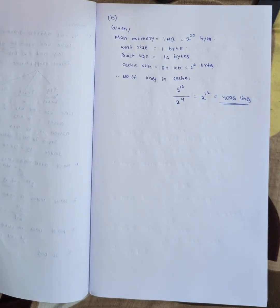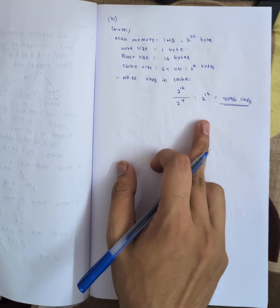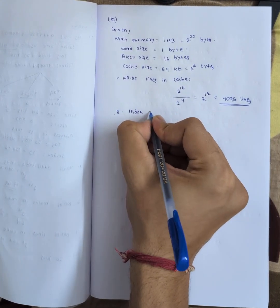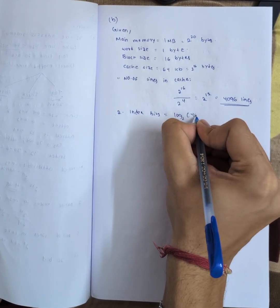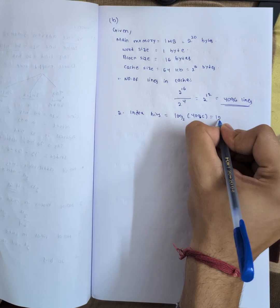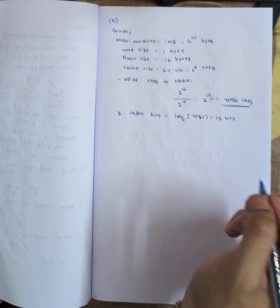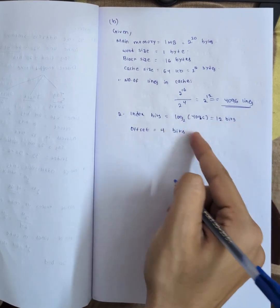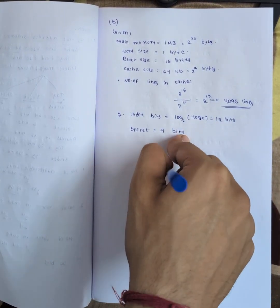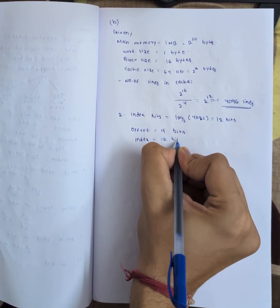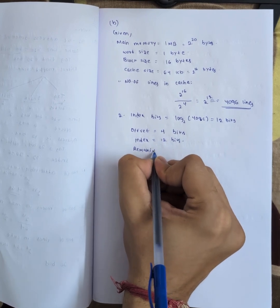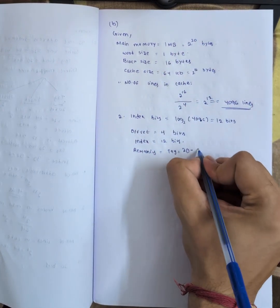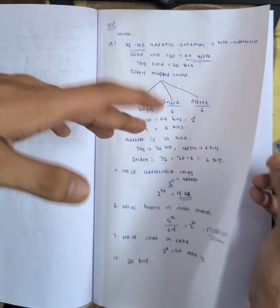Now we find the index bits. Since 2 power n = 4096, taking log gives index = 12 bits. For the offset: block size is 16 bytes = 2 power 4, so offset = 4 bits. For the tag: main memory is 2 power 20, so tag = 20 − 12 − 4 = 4 bits.